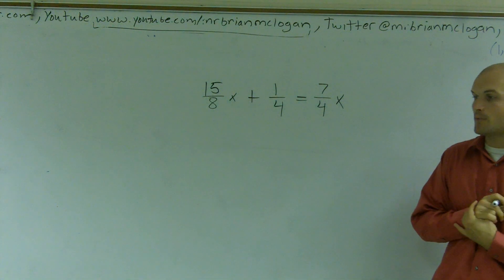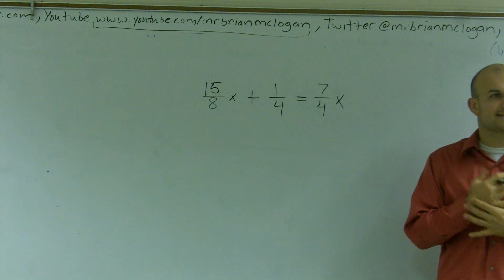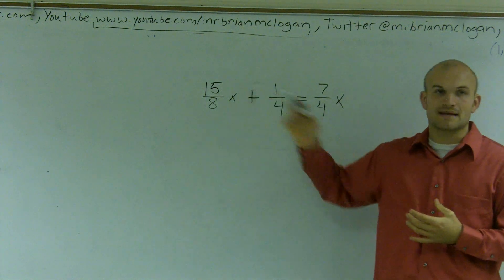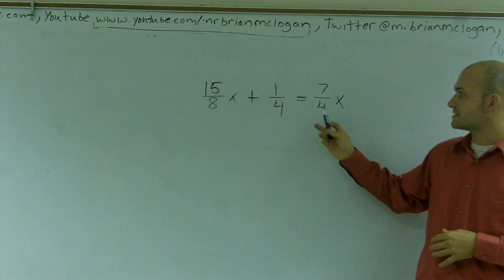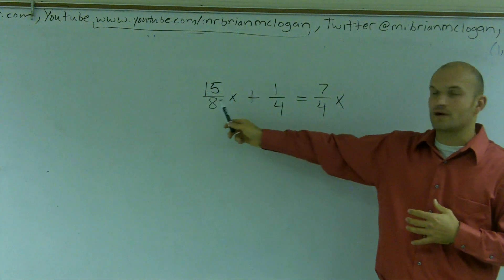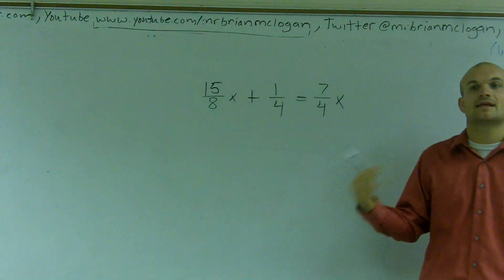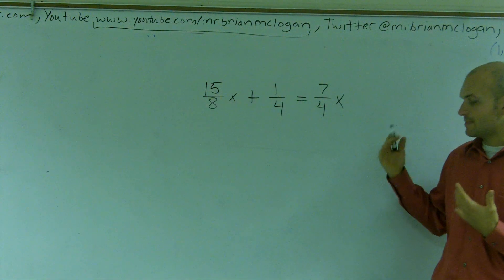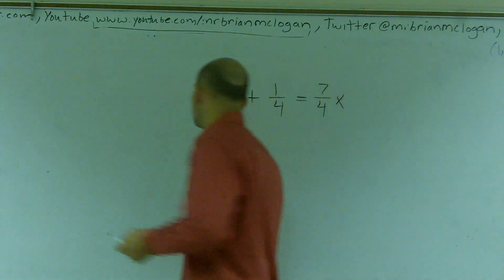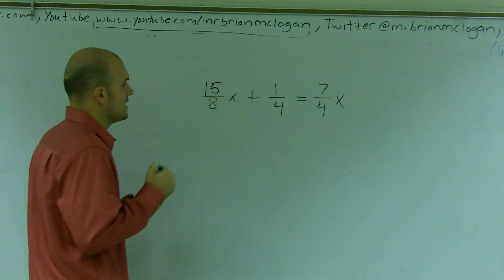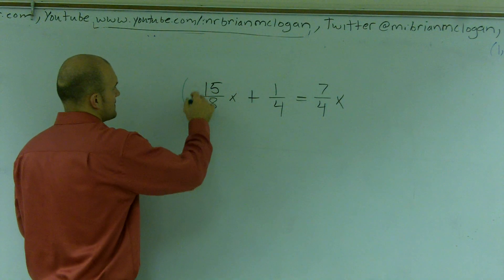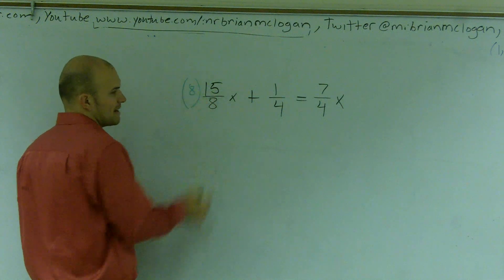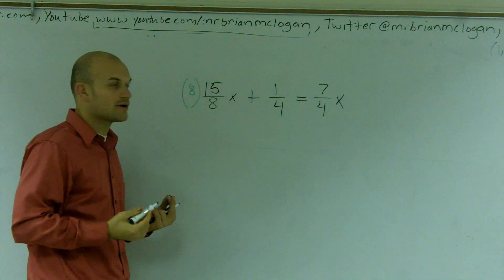So what we're going to want to do is we're going to multiply by the least common multiple for all of our denominators. And when I look at this, I say, what is the smallest number that four, four, and eight all go into? And you can say that number is eight. So what we're going to do is I'm going to multiply every single term by eight. And the reason why is because if I divide by eight and multiply by eight, those are going to cancel each other out, right?